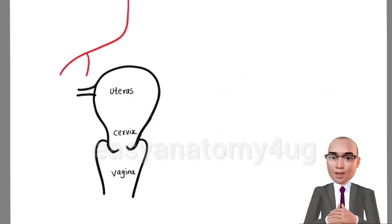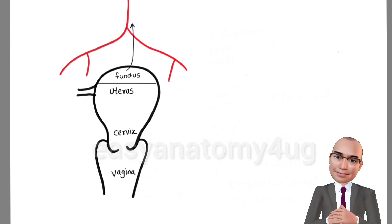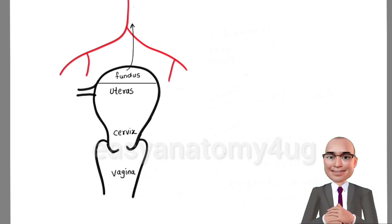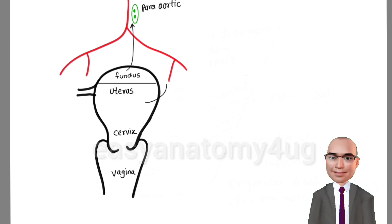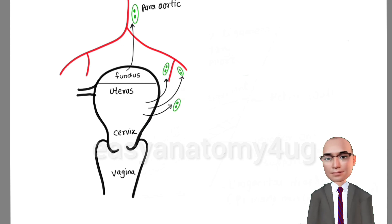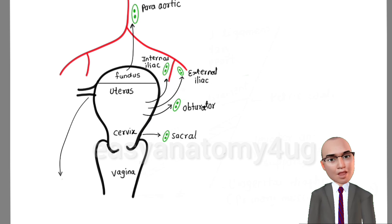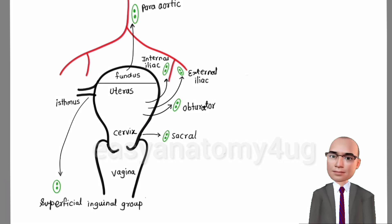To show lymphatic drainage, draw the abdominal aorta with its bifurcation into common iliac and external and internal iliac vessels. The fundic region drains towards the para-aortic lymph nodes. The body and cervix drain mainly towards the external iliac, internal iliac, and obturator nodes. The posterior wall of the cervix drains towards the sacral nodes. A small part of the corner of the uterus at the opening of the uterine tube drains towards the superficial group of inguinal lymph nodes along the round ligament of the uterus.